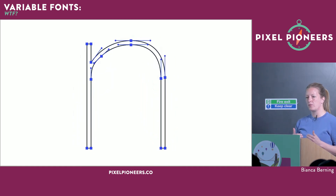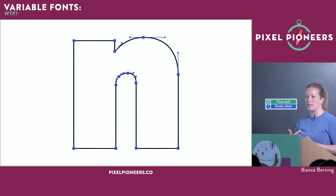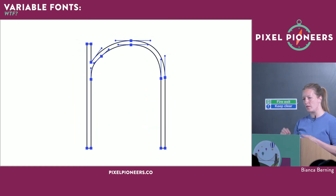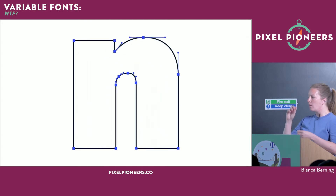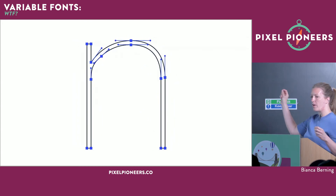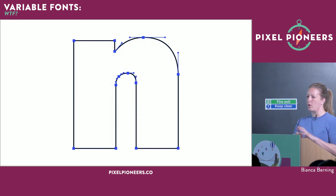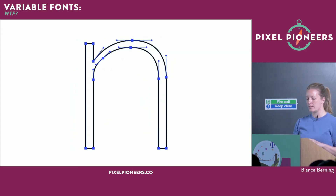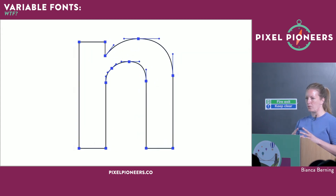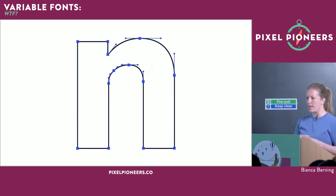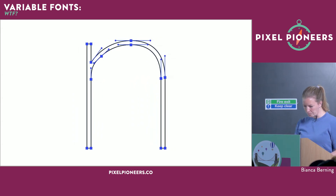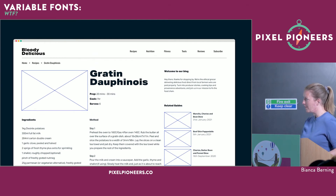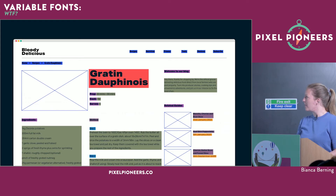Instead of defining the outlines three times and giving people three different font files, they decided to define the outline once and only add information telling you where those points travel to. Everything is now in one font file, and the data is actually much less than having three or more separate font files. Going back to my recipe website, if I mark all the fonts being used, it's actually quite a lot.